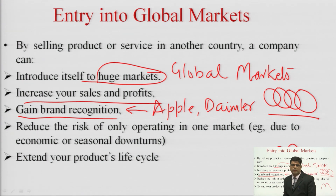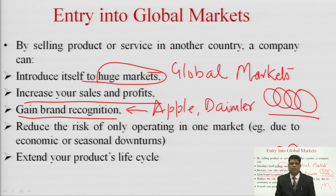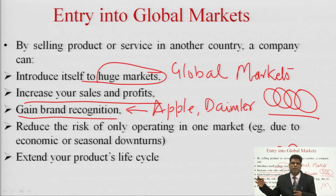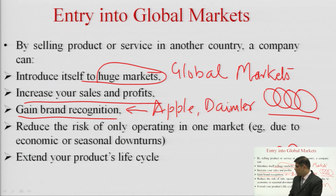Going global also reduces risk. When the company starts selling in many countries, the risk is reduced in that even if the product fails in the home country, people of other countries might accept it and profitability continues. This distributes the risk spatially. While selling in only one country risks huge losses if people stop accepting the product, in foreign markets revenue flows can keep coming even if the home market has issues.